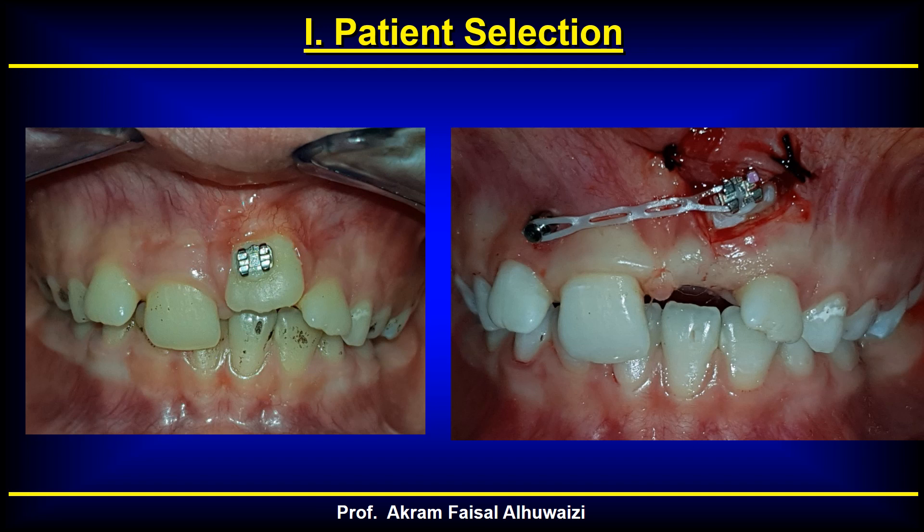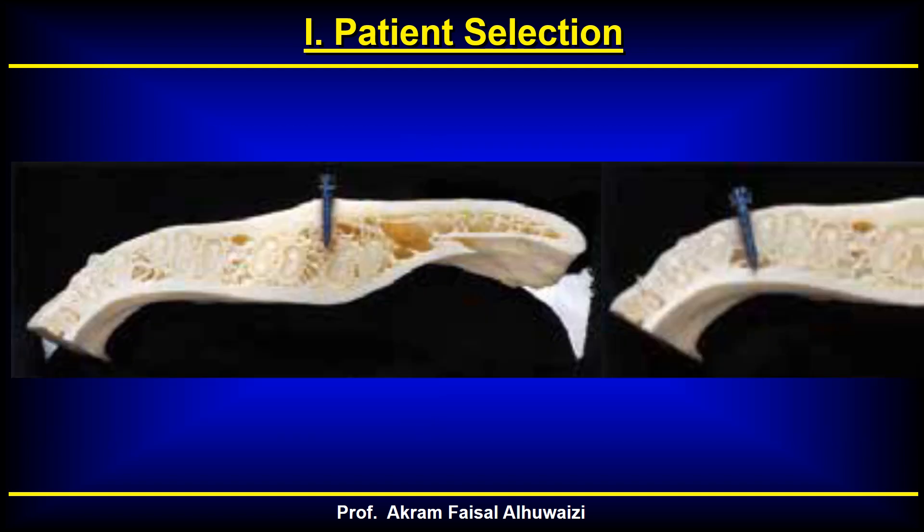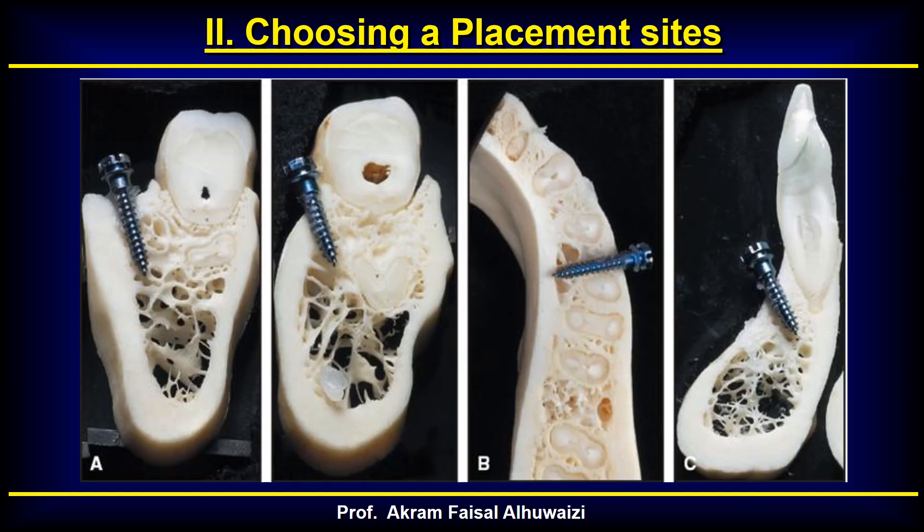Regarding older patients, selection is not regulated by age — it is regulated by the thickness of the cortical plate. If the cortical plate is thicker than 0.5 millimeters, it should hold the TAD. If it's much thinner, the TAD is going to migrate, so using a bicortical TAD — inserted through and through from one side to the other — would be indicated.